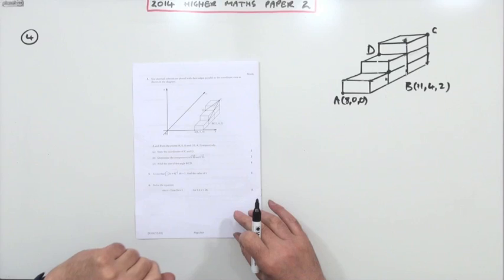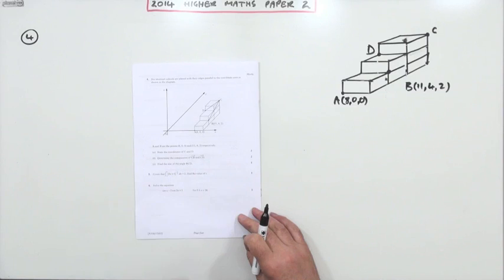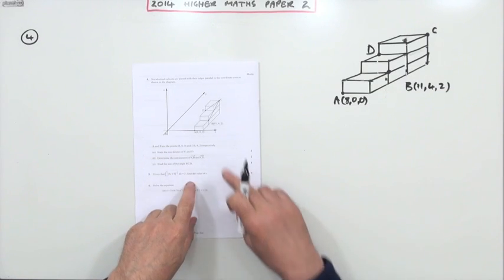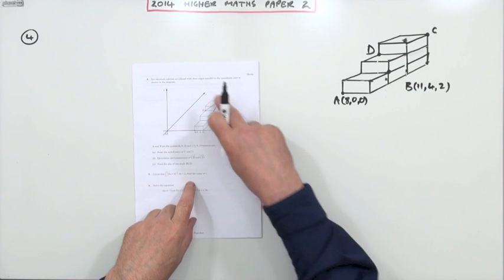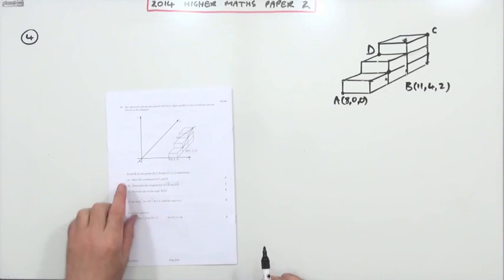So number four then from the 2014 Higher Maths paper, the angle between two vectors question. But first of all, you have to go through this diagram to try and figure out a couple of coordinates. So part A, what does part A say? State the coordinates of C and D.